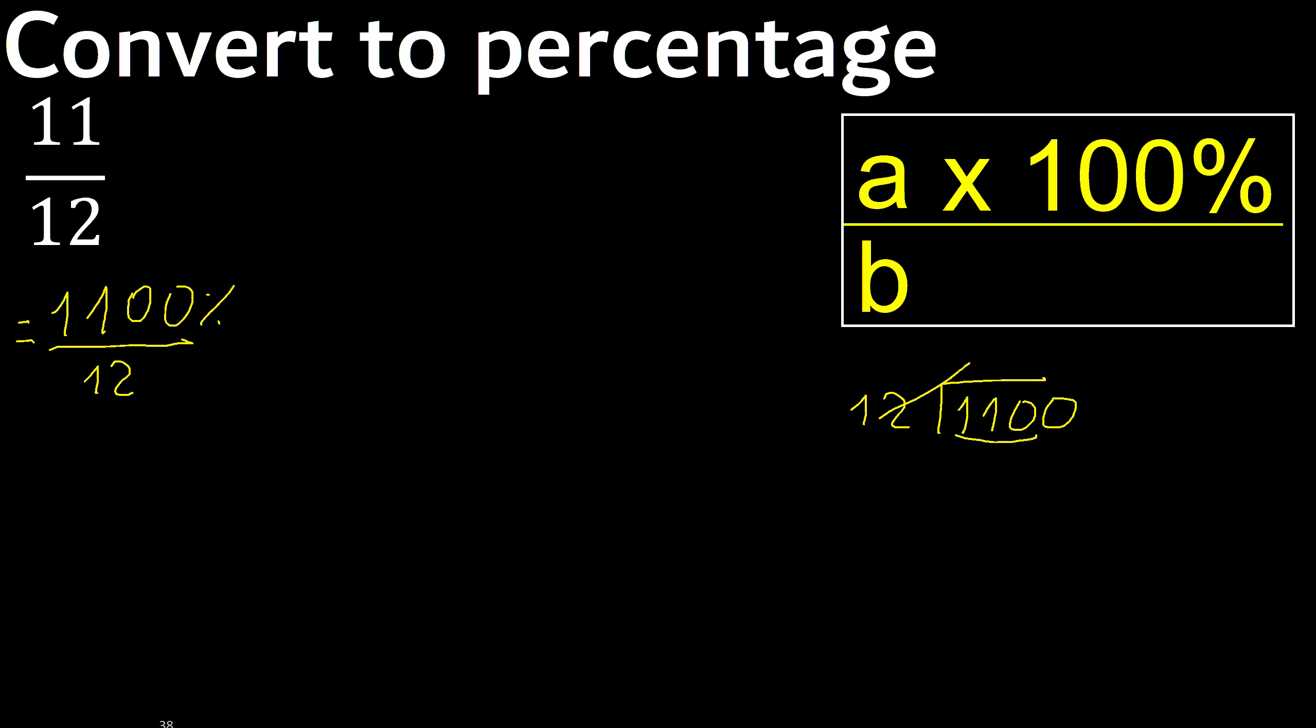Twelve, multiply by which number is nearest to one hundred ten but not greater? Twelve multiplied by nine is one hundred eight, is not greater. Subtract is two.